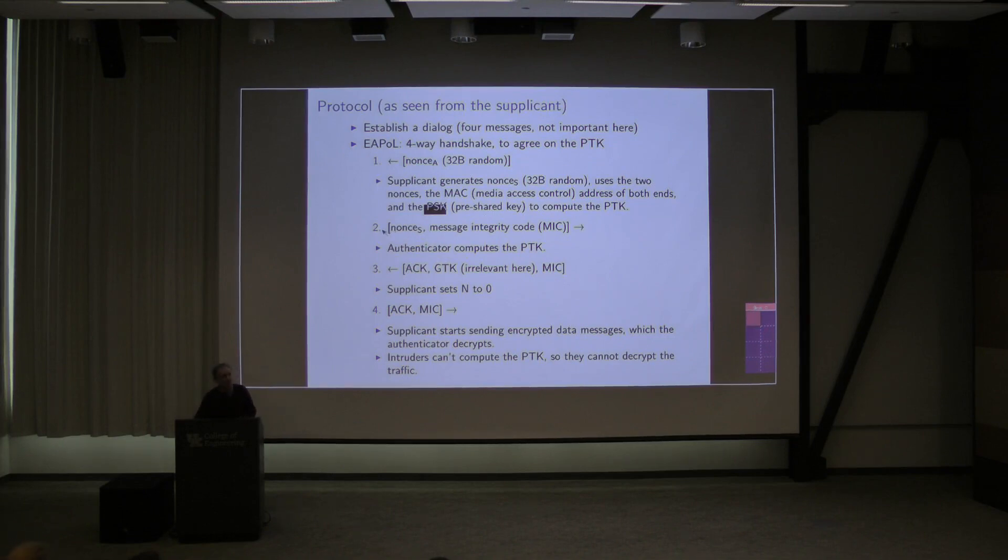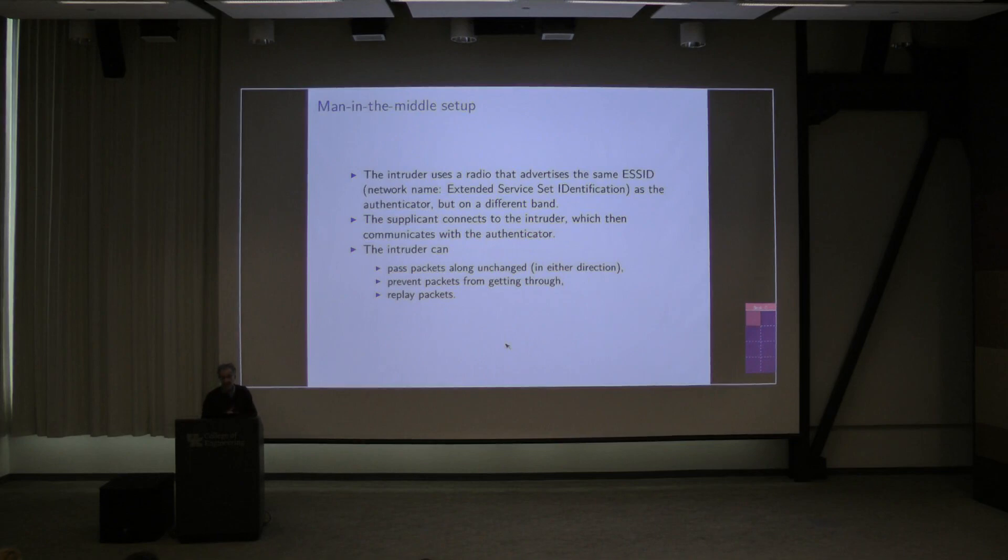Message two is, I will send back upwards the nonce sub s and a message integrity code. So anyone listening in knows the two nonces, knows the two MAC addresses, does not know that secret. And so no one listening in can do the same computation that both ends can do. What they can do is they can compute this PTK, and any time there's a new connection, it will be a new PTK. There will probably be new nonces flying back and forth. The nonces are never reused.